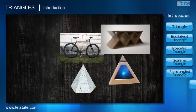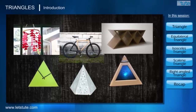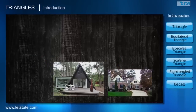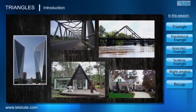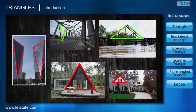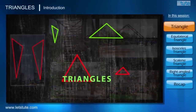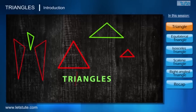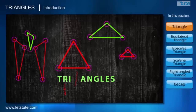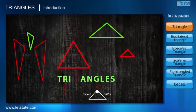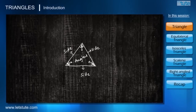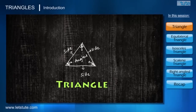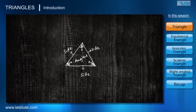If you notice in the surroundings, there is one shape which is majorly used by architects and engineers and most commonly seen in different structures like rooftops and bridges. That shape is triangle. If we split the name, 'tri' means three and 'angles' means the corners made by two sides. So if a shape has three sides and they form three angles, then it is called a triangle.